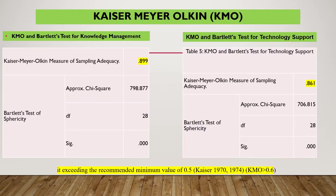From the analysis, the KMO value for knowledge management is 0.8 and for technological support is 0.81. Both values exceed the recommended minimum of 0.5 as stated by Kaiser 1970, and also exceed the 0.6 threshold which is the basic requirement for KMO.